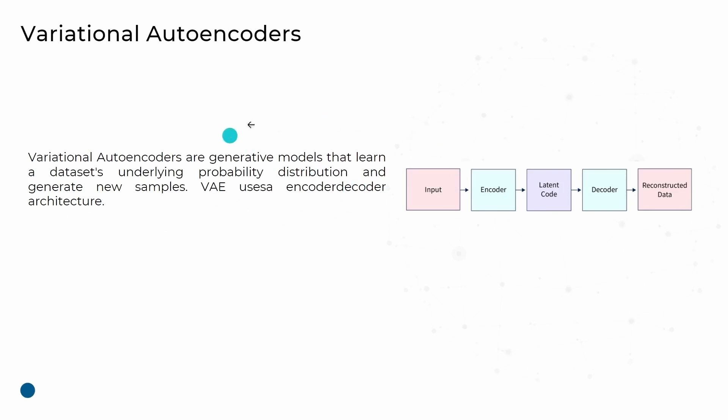Next, we have Variational Autoencoders. VAE is a type of generative model in machine learning used to create new data samples that resemble the original data. VAEs are popular for generating images but can also be applied to other types of data such as text or audio.